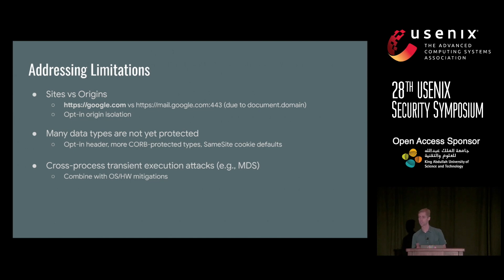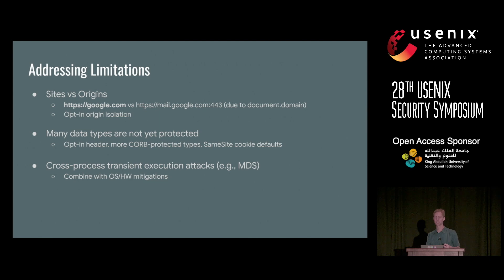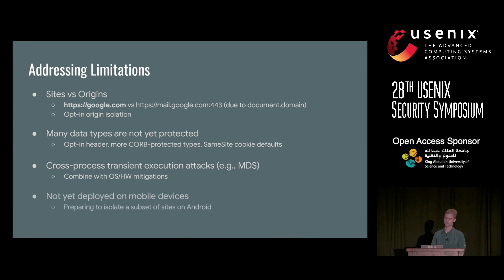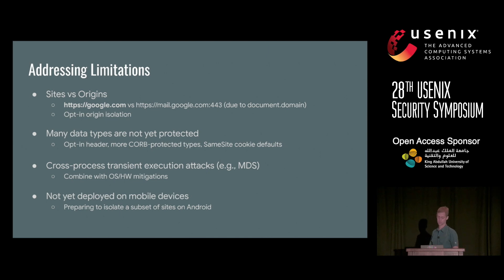Cross-process transient execution attacks — such as micro-architectural data sampling (MDS/Fallout), where another hyper-thread on the same core might be targeted — require combining with OS and hardware-level mitigations. Additionally, this launch was for Chrome desktop platforms; we haven't yet launched on Android or mobile devices. We are working to handle the different workloads on those devices to be able to isolate a subset of sites on Android.